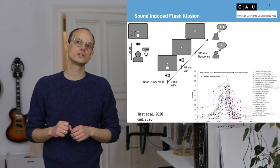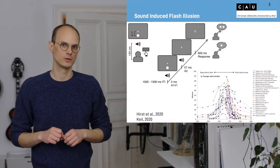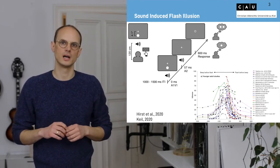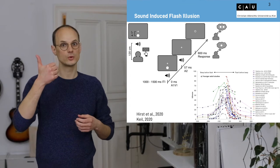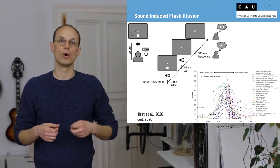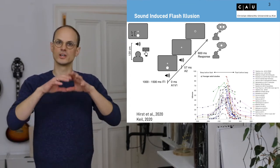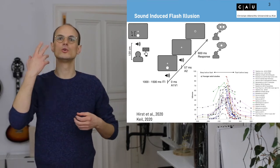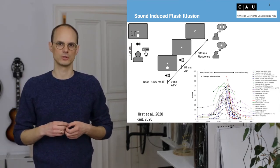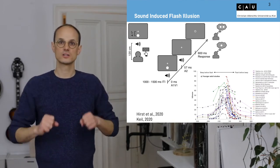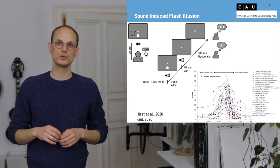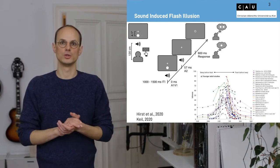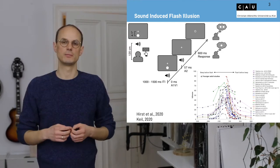To do so, we use the sound-induced flash illusion. The sound-induced flash illusion is a very established experimental paradigm in which we present one visual stimulus together with two auditory stimuli. In about half the trials, this induces the perception of an illusory second visual stimulus. Over the last 20 years, the sound-induced flash illusion has been used across many different populations, and it has been shown that this is a bistable perception.